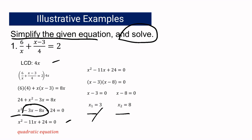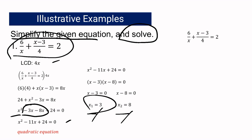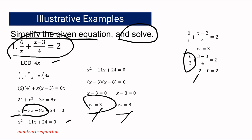The values are 3 and 8. To verify, we use the original rational algebraic expression. If X equals 3, substituting gives us 6 over 3 plus (3 minus 3) all over 4 equals 2. Simplifying: 6 over 3 is 2, the second expression becomes 0, so we have 2 equals 2. Since both sides are equal, X sub 1 equals 3 is correct.